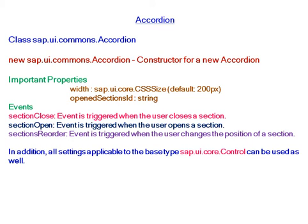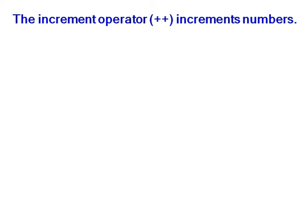Events associated: sectionClose event is triggered when the user closes a section; sectionOpen event is triggered when the user opens a section; sectionsReorder event is triggered when the user changes the position of a section. In addition, all settings applicable to the base type sap.ui.core.control can be used as well.